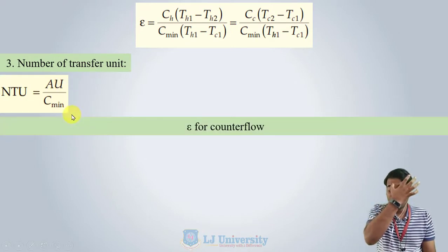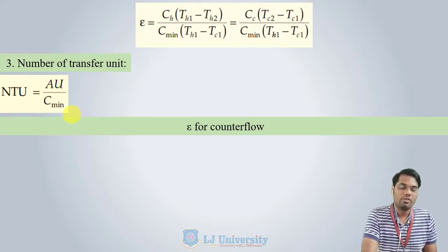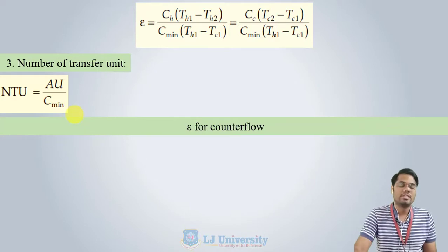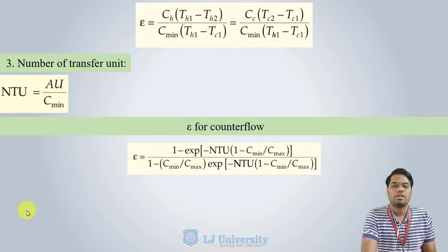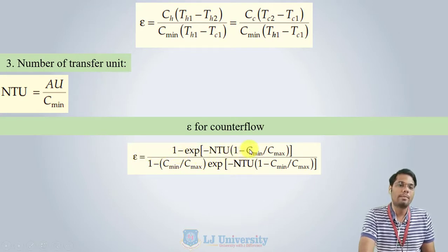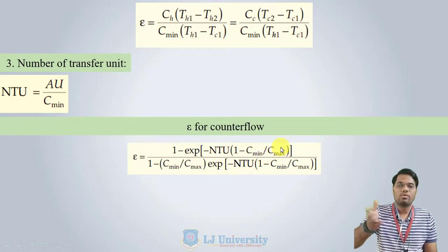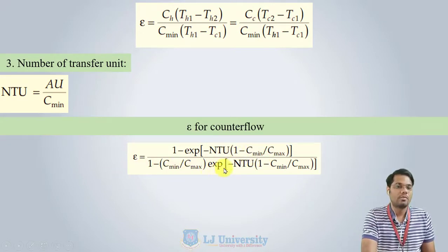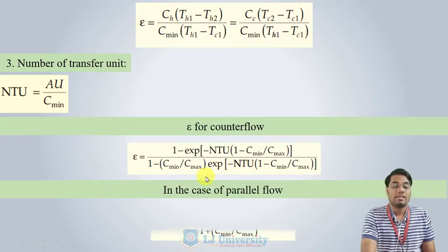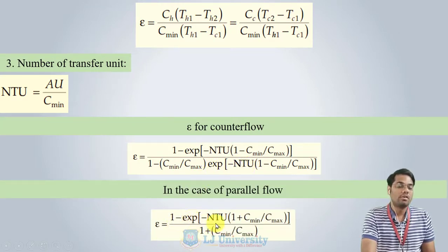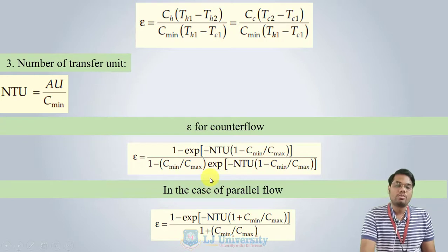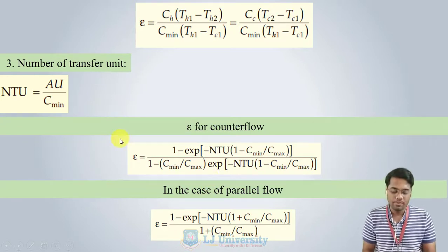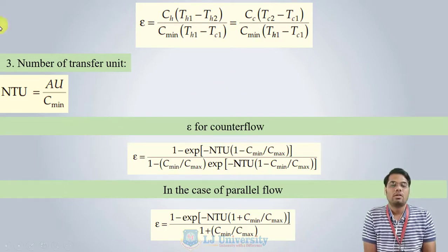We previously derived effectiveness equations for counter flow and parallel flow heat exchangers. For counter flow: ε = [1 − exp(−NTU·(1 − C_min/C_max))] / [1 − C_min/C_max · exp(−NTU·(1 − C_min/C_max))]. For parallel flow: ε = [1 − exp(−NTU·(1 + R))] / (1 + R), where R = C_min/C_max. You can refer to the previous semester subject links for the full derivation.